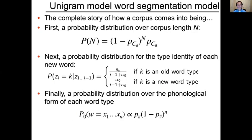Another way of recapping this model: the complete story of how a corpus comes into being is that first there's a probability distribution over the length of the corpus — the corpus length is geometrically distributed with parameter p_C-hash, the probability of the corpus ending after any particular word. Next, there's a probability distribution for the type identity of each new word: old word types have probability proportional to their frequency so far, and a new word always has probability proportional to alpha-naught. As the dataset gets bigger, the probability of encountering a new word gets smaller, but is always non-zero. Finally, the phonological form of the word type is distributed as P-naught.